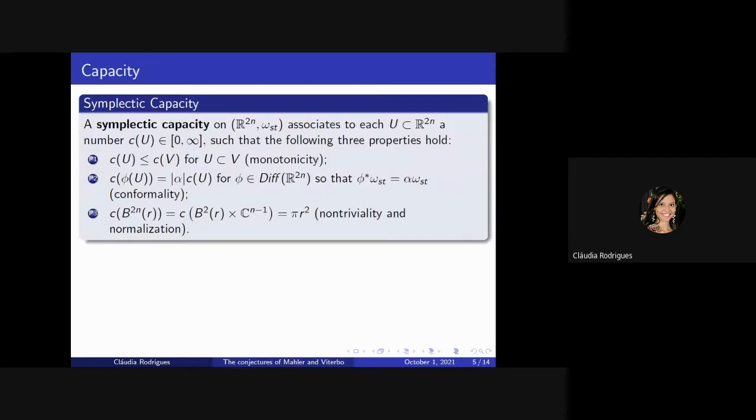The second one, we need to know about capacity. A symplectic capacity on R to 2N associates to each U in R to 2N, a number C(U) in the closed interval zero to infinity such that the following three properties hold. P1, the monotonicity: C(U) is less than or equal to C(V) for U contained in V. P2: C of phi U is equal to alpha norm C(U) for phi, a diffeomorphism, so that the pullback satisfies this equality.